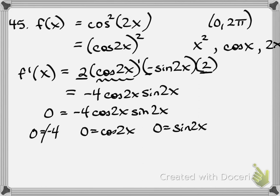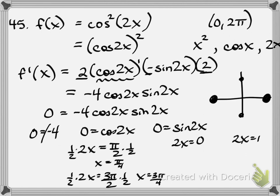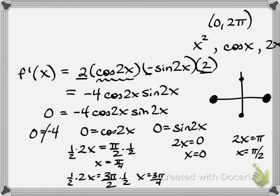Where is cosine equal to zero? Cosine equals zero at π/2 and 3π/2. So instead of x equaling those values, we have 2x = π/2 and 2x = 3π/2. Multiplying by one-half: x = π/4 and x = 3π/4. Likewise, where is sine equal to zero? Sine is zero at 0 and π, so 2x = 0 and 2x = π, giving x = 0 and x = π/2. These are our critical numbers on the interval from 0 to 2π. Since 0 is an endpoint of the open interval, we don't include it.